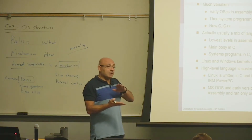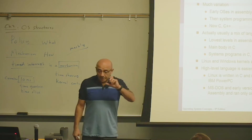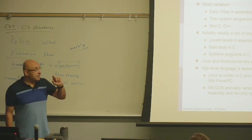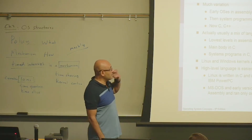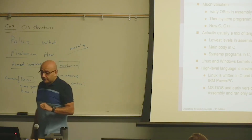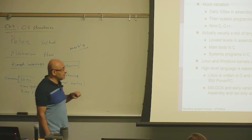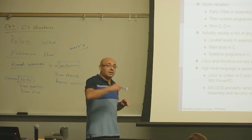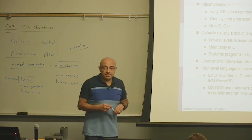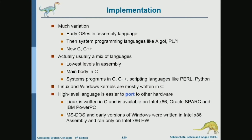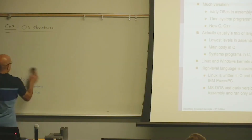In the operating system itself — in the kernel itself — certain performance-critical sections may sometimes be written in assembly, not in C. For those performance-critical sections, the code is handwritten in assembly, as opposed to writing it in C and relying on the compiler to translate it into assembly. Earlier operating systems were written in machine language; modern operating systems are written in high-level languages, which is C and C++.